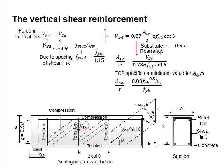This slide shows the derivations of the equations to determine the amount of shear reinforcement in a reinforced concrete beam. The shear reinforcement is provided in the form of a vertical shear link or stirrup.